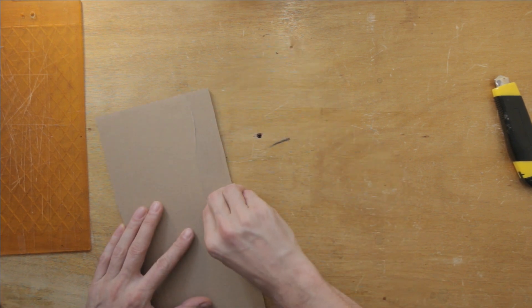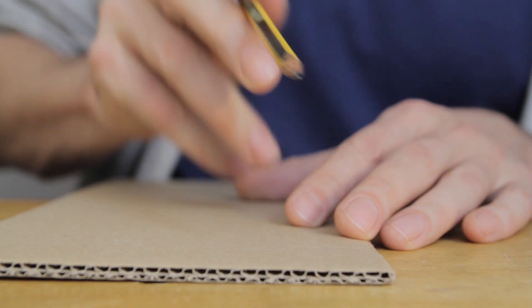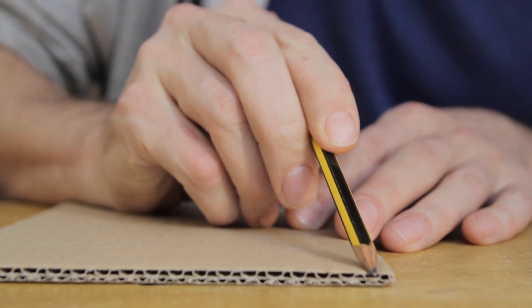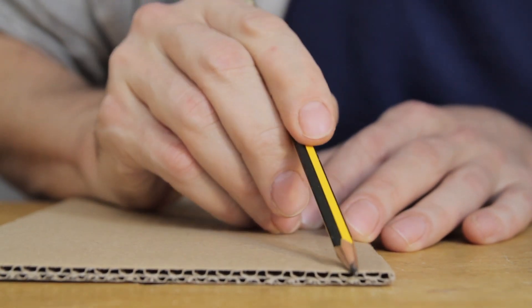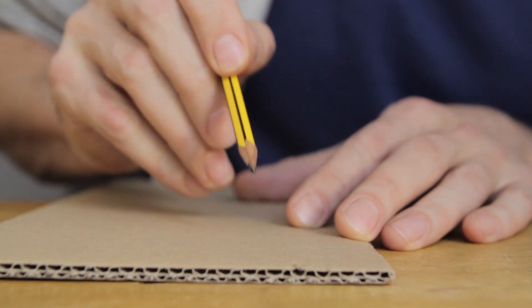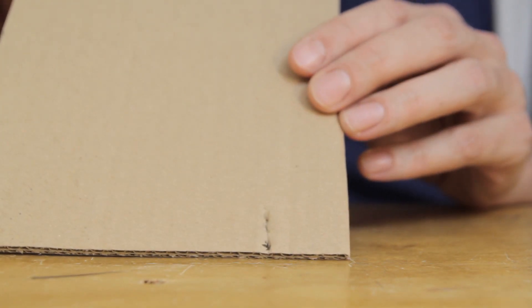I'll also get rid of this tape here. The next step is where things start getting interesting. We need to fold this cardboard into a tube shape, and we'll use the corrugation to help with this process.